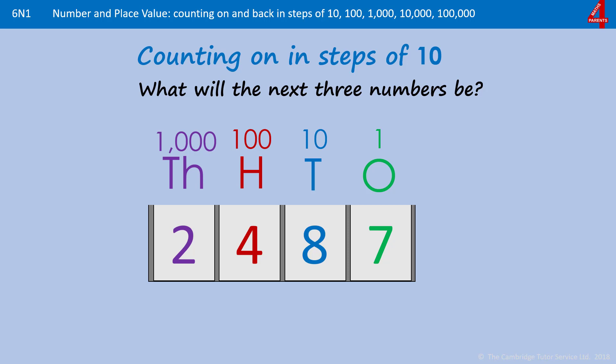If we add on 10 to 2487, that tens column, that eight digit will move up to nine.